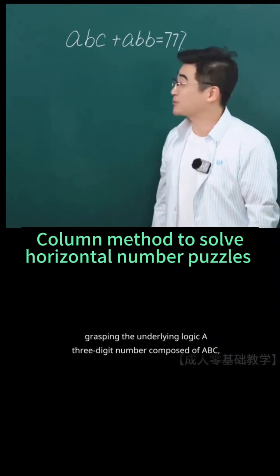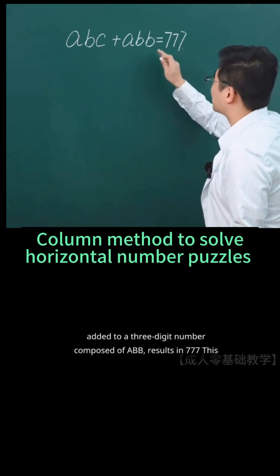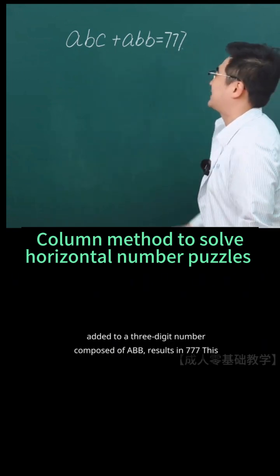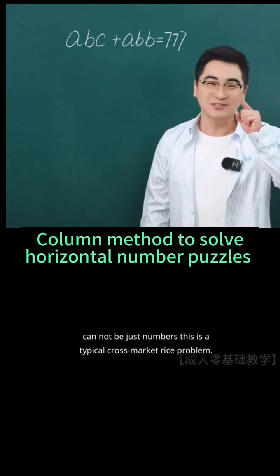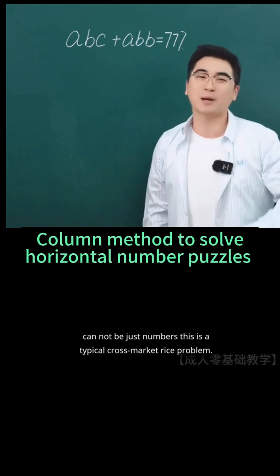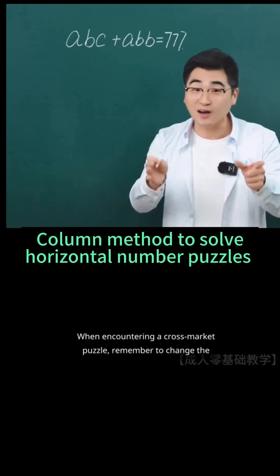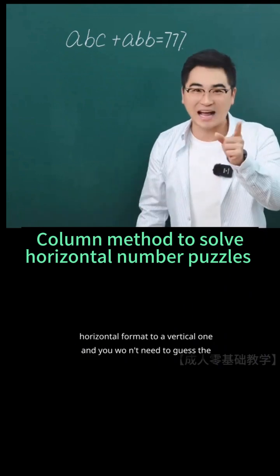A three-digit number composed of ABC added to a three-digit number composed of ABB results in 777. This cannot be just numbers. This is a typical cross-market rice problem. When encountering a cross-market puzzle, remember to change the horizontal format to a vertical one.